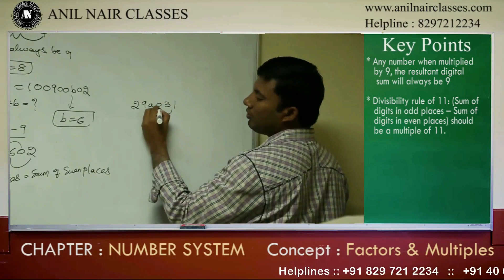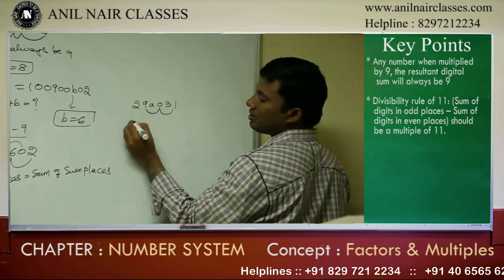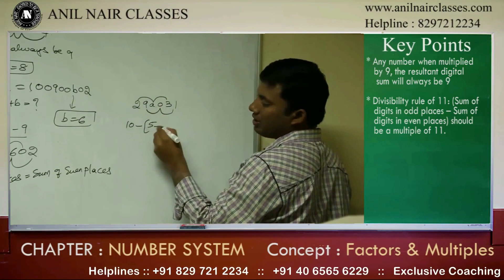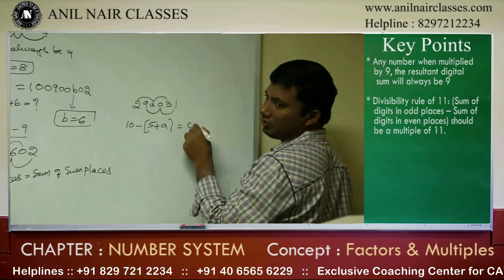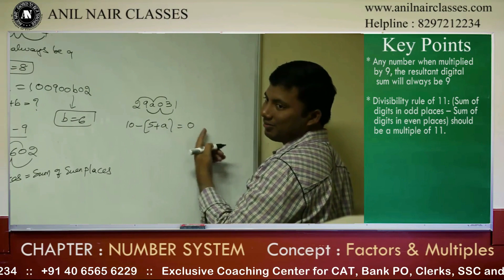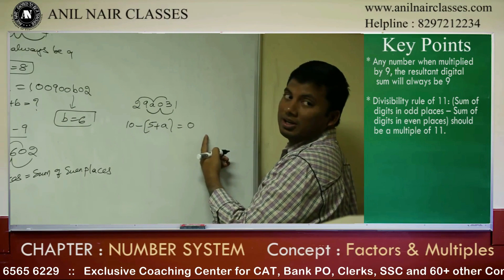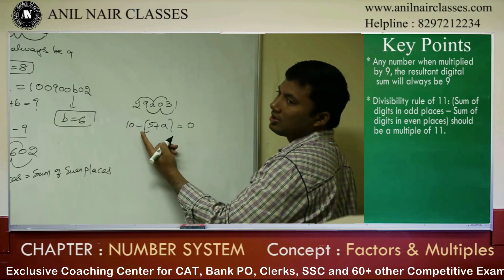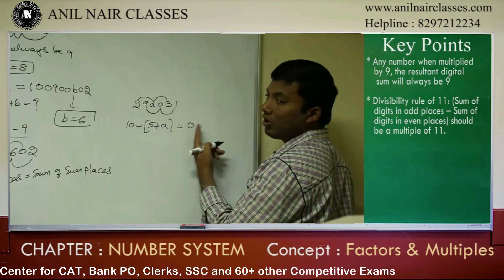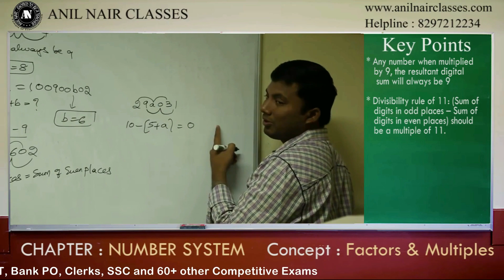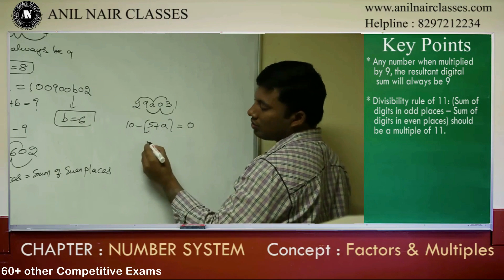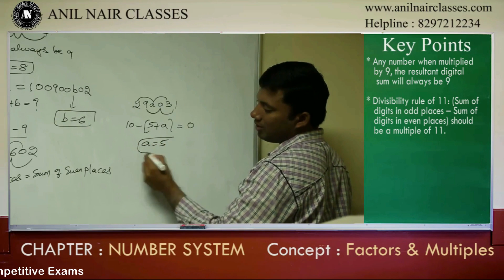So, 29A031 — what is the sum of the places? 10. 10 minus half. So 5 plus 8 should be 0. What is the divisibility rule of 11? The difference between the odd places sum and even places sum should be 0 or a multiple of 11. It cannot be a multiple of 11 because 10 minus some number — will it be 11? No. So what will be A value? 5. Please write it down.